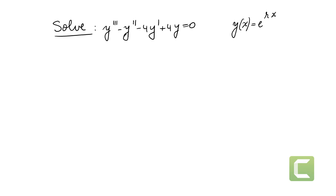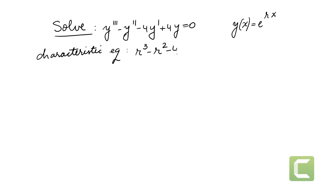So if we substitute the first, second, and third derivatives into our equation, we are going to end up with the characteristic equation — our auxiliary equation — of the form r³ minus r² minus 4r plus 4 equals zero. And we want to solve this equation.